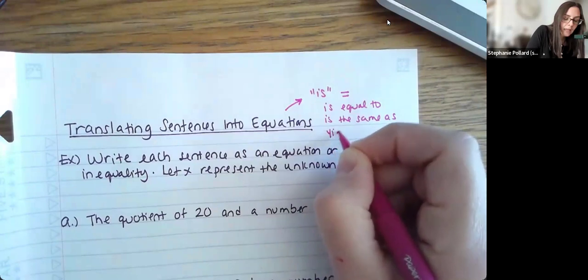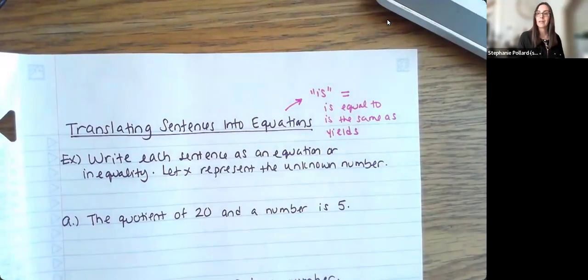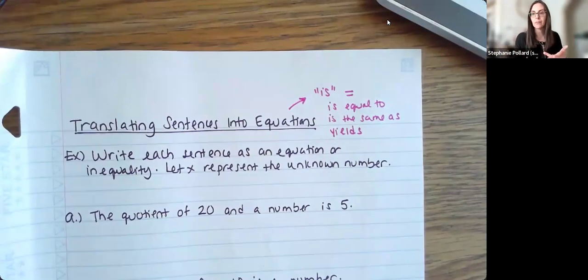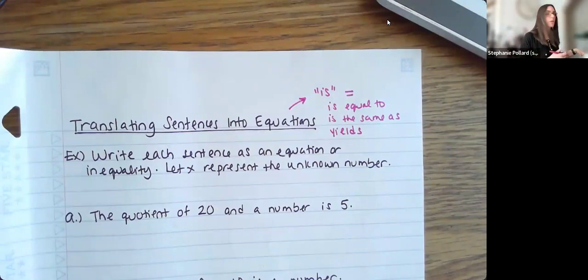Sometimes we use the word like yields. The result yields in this particular answer, or something like that. So there are definitely a few keywords here that we can look through and think about when using equals as well. These are just a couple of them.